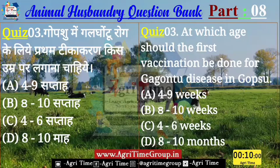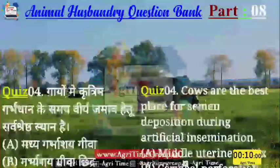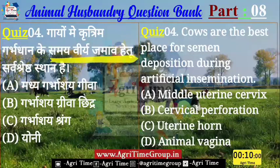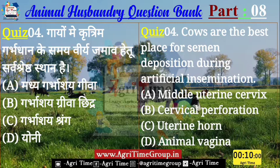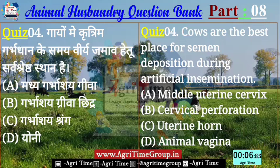Question number 4 — यह रहा आपके screen पर। गायों में कृत्रिम गर्भाधान के समय वीर्य जमा करने का सर्वश्रेष्ठ स्थान इन options में से कौन सा है? Option में दिये हैं: मध्य गर्भाशय ग्रीवा, गर्भाशय ग्रीवा छिद्र, गर्भाशय भ्रंग, या D में दिया है योनि। तो बतलाईए quiz 4 के लिए right answer क्या होगा, dear Agrarians?